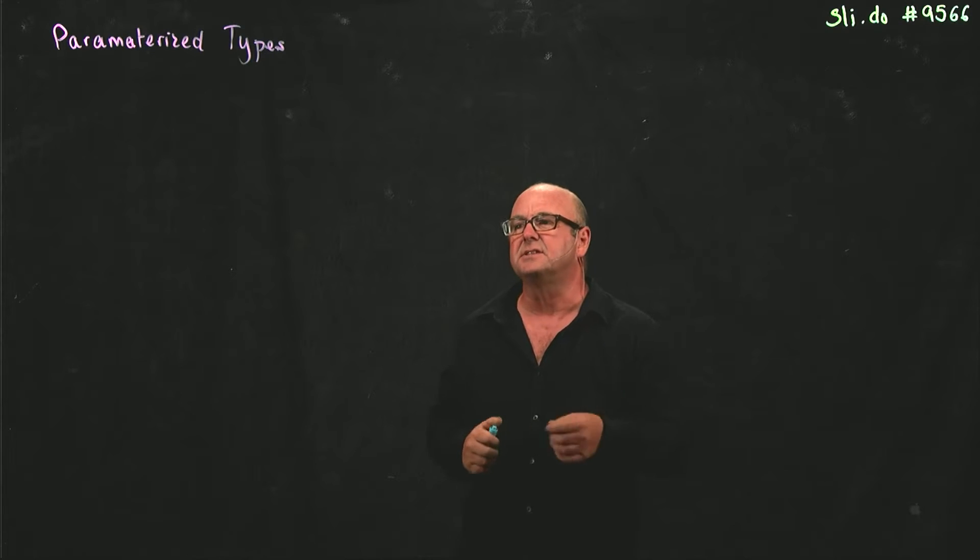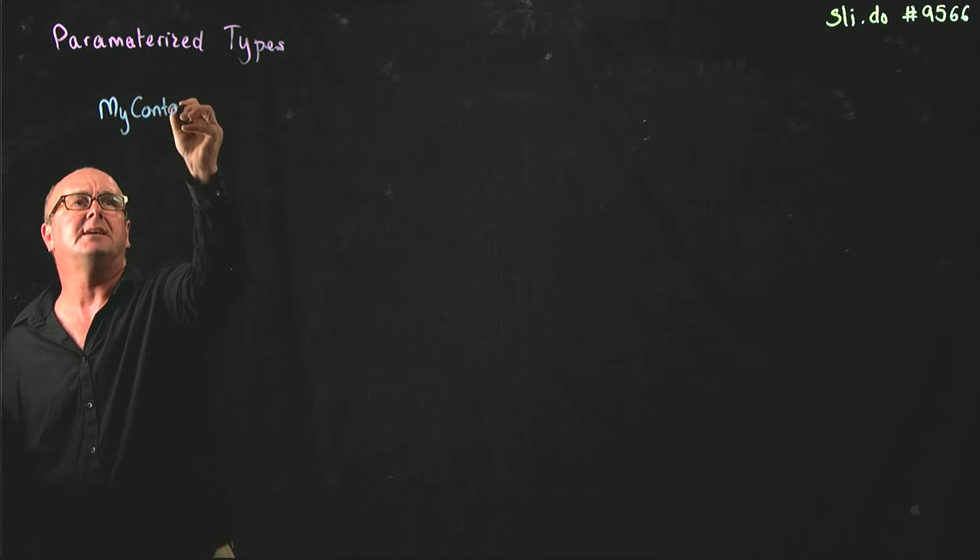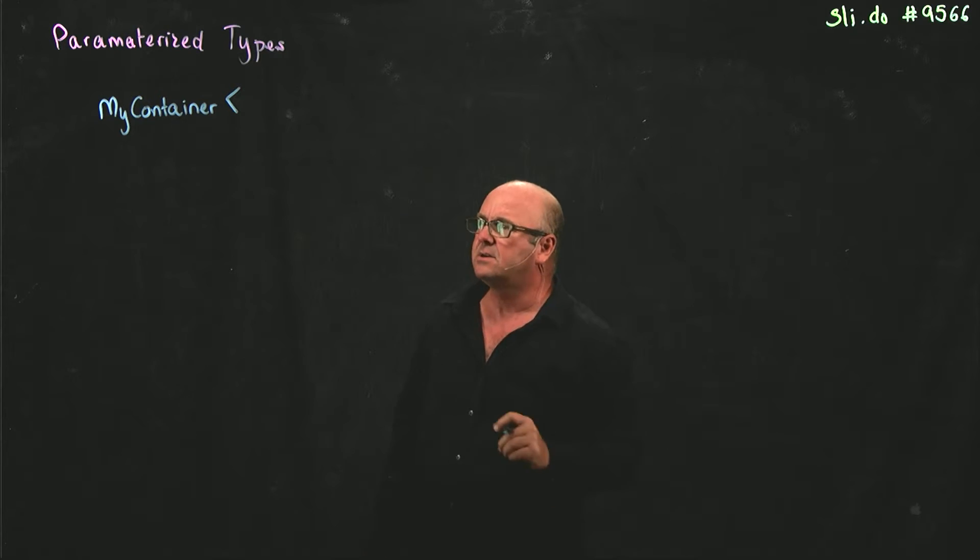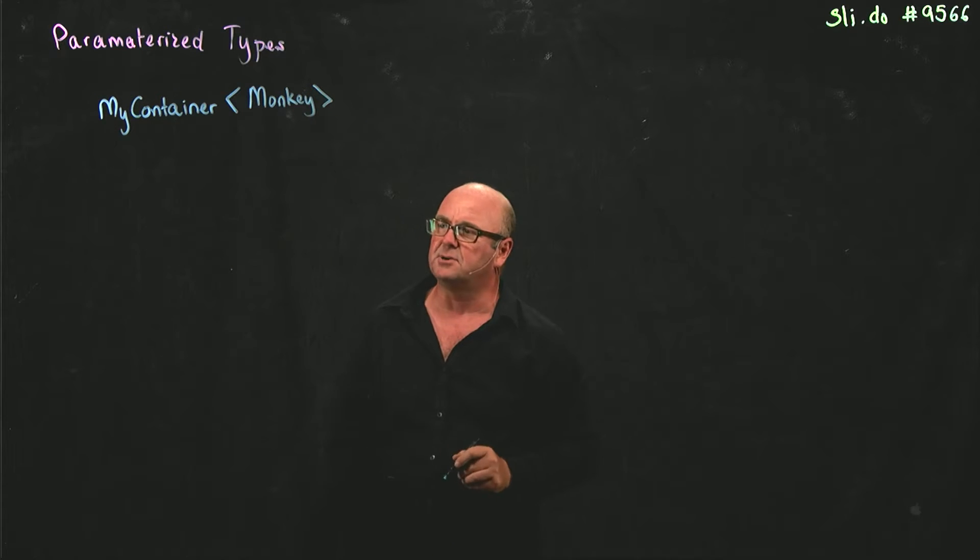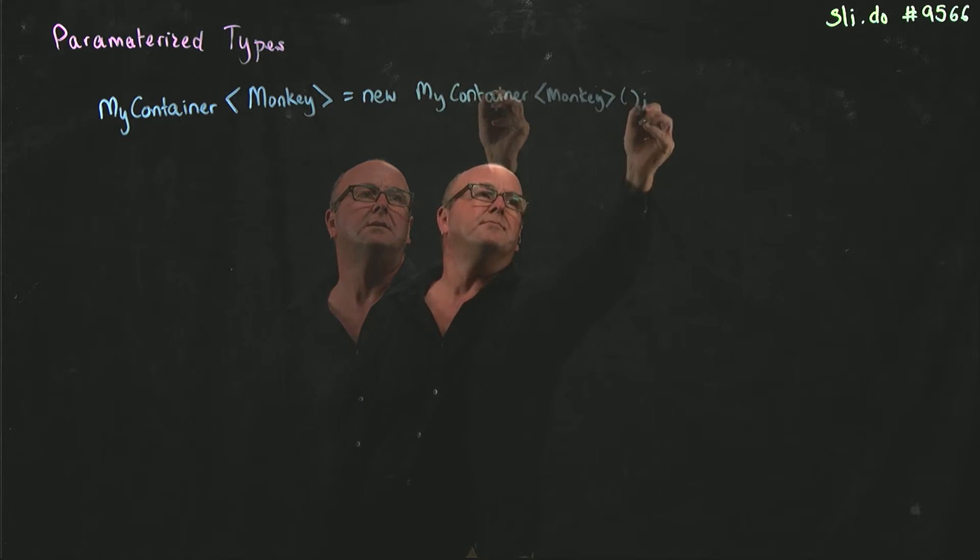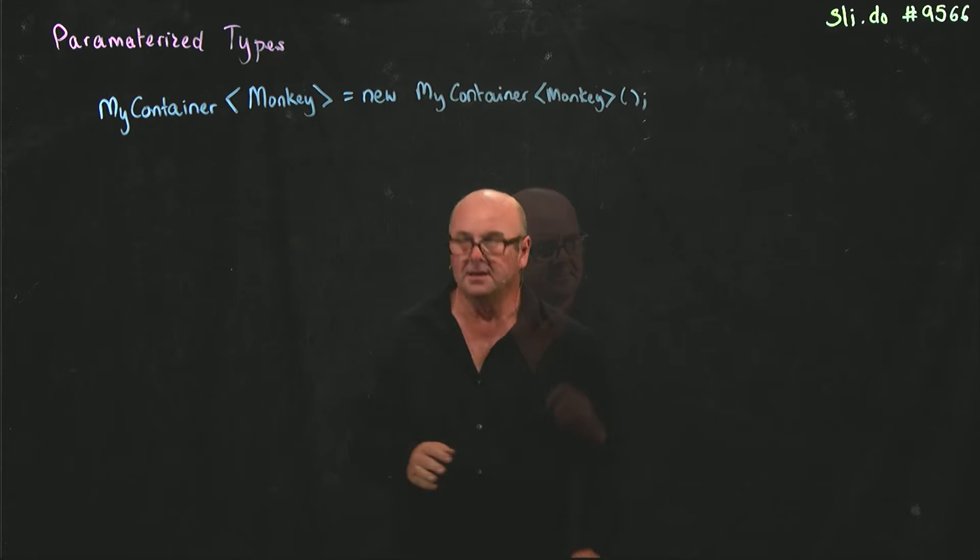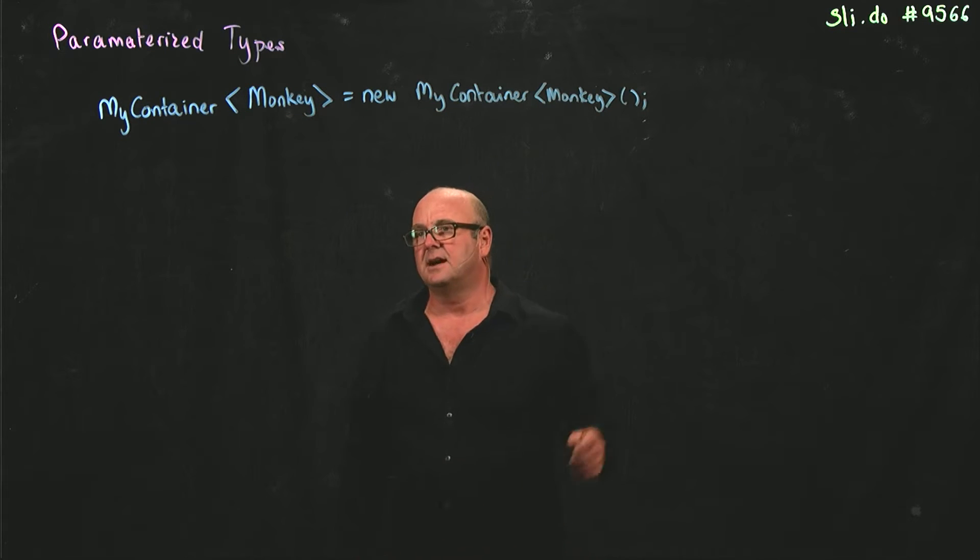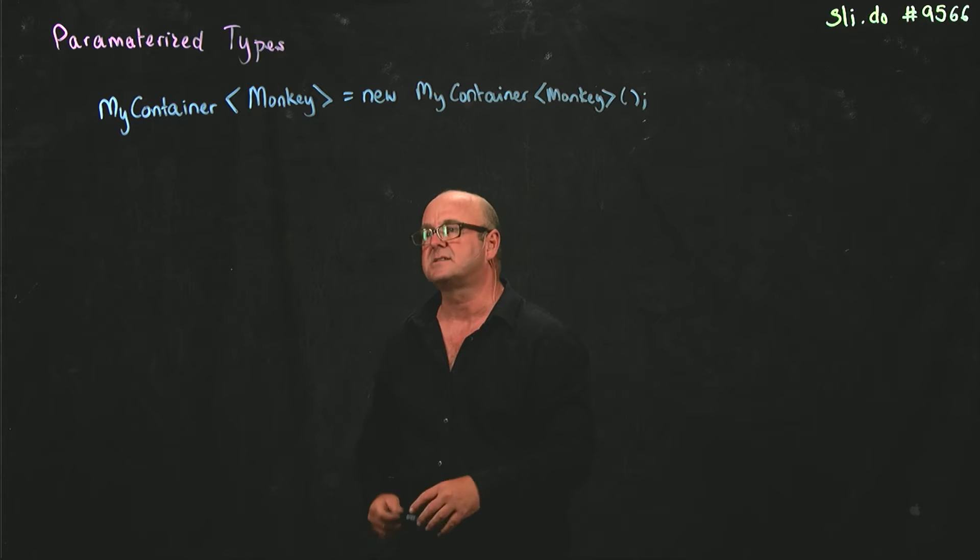So parameterized types allow us to define a container. Let's say we define a container called my container, and we specify what kind of things can go in this container. If I specify that I'm going to put monkey objects in my container, then I can only put monkey objects in my container. I can't put strings, undergraduates, students, or anything else in this instance of the container.